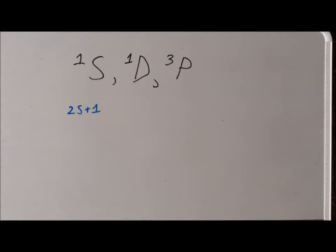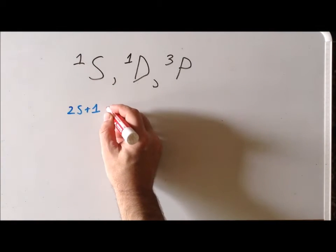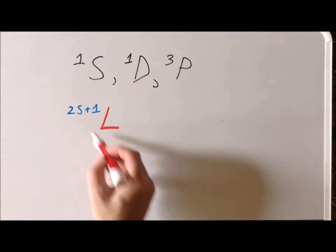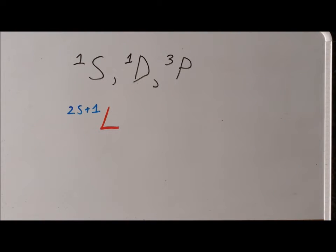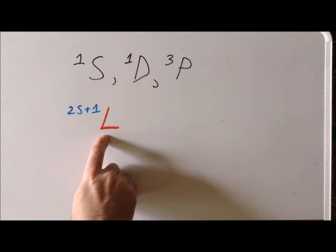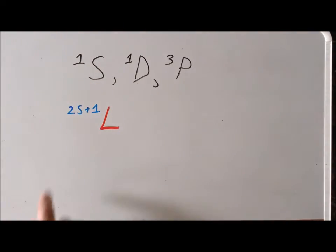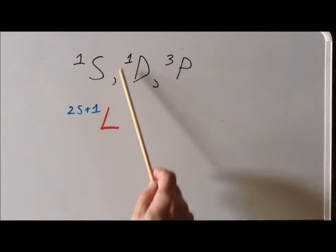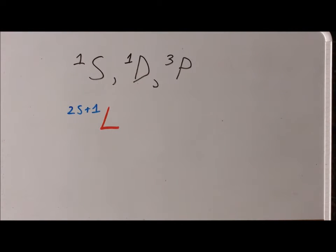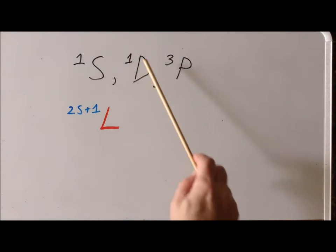The main body of the term symbol is a capital letter that tells us information about the total orbital angular momentum. In the case where the total angular momentum L is equal to zero, that's going to correspond to an S orbital. In this case here, D corresponds to a total orbital angular momentum of 2, so the D here just tells us L is equal to 2.